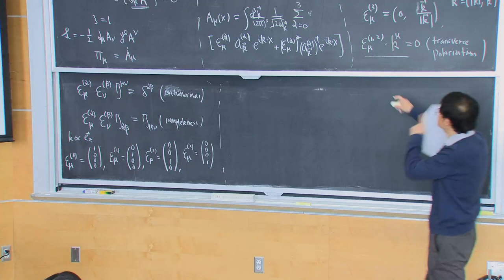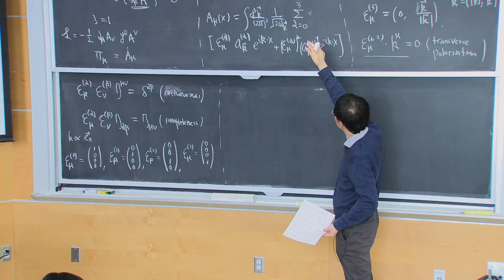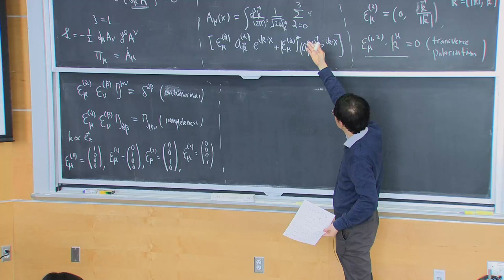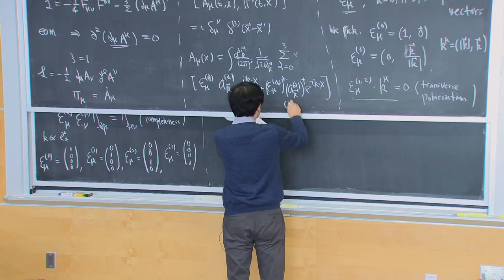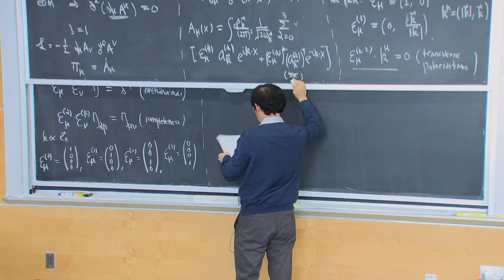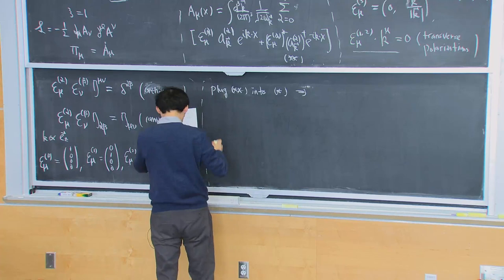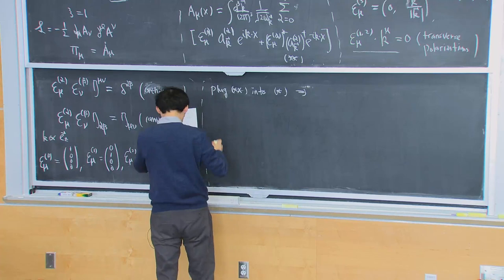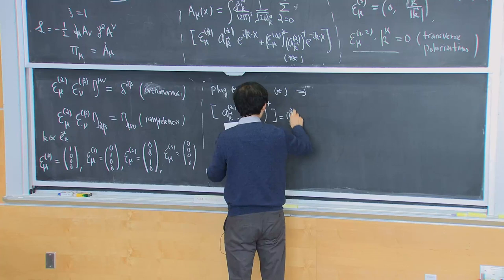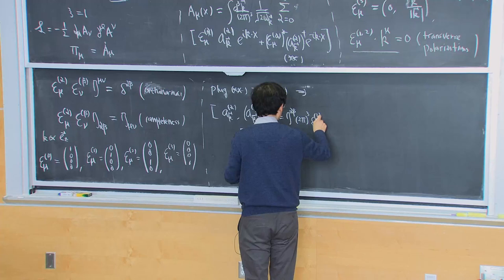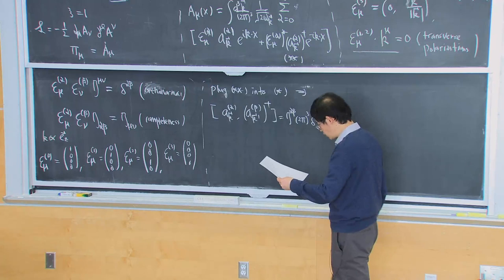Now if you plug in this expansion, as we do for the scalar, and then plug back into the commutation relation, you get the commutation relation for the a operators. Plugging the mode expansion into the canonical quantization condition, we get: [a_{k,alpha}, a^dagger_{k',beta}] equals eta_{alpha,beta} times (2pi)^3 delta^3(k - k'). The rest of the commutators are all zero.